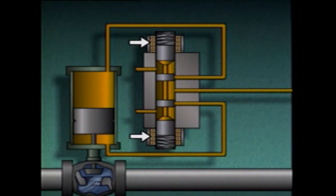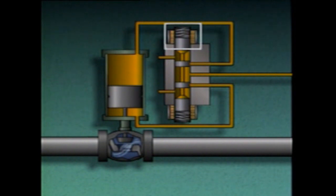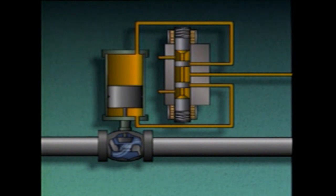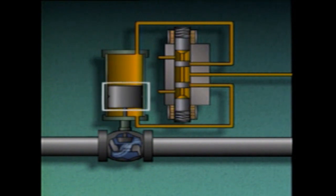The pilot valve is operated by the solenoids, or electrical coils, which respond to signals from a controller to position the spool. In this example, one solenoid is attached to the top of the spool and one is attached to the bottom. When both solenoids are de-energized, the springs return the spool to a neutral or centered position, blocking the fluid lines going to the actuator cylinder. This holds the actuator's piston in place.